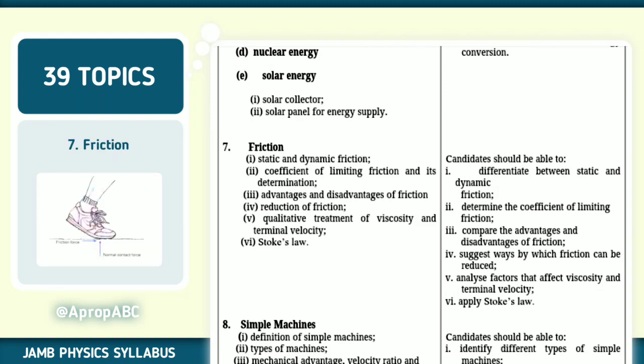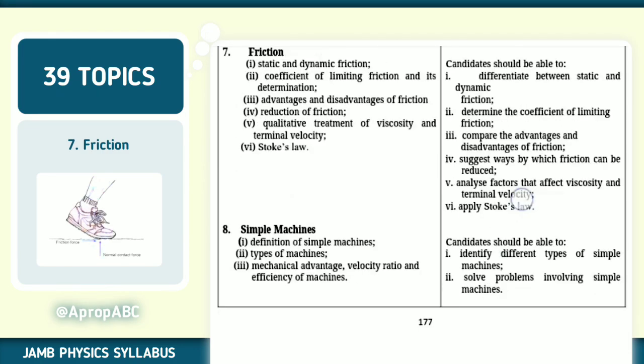Friction, number seven out of 39. Friction opposes motion. And without friction, a lot of things will be pending. Note the static and dynamic friction. Definition of limiting friction and determination. Advantages and disadvantages of friction. Reduction of friction. Stoke's law. Check the application of Stoke's law. Check the objectives of JAMB on friction.